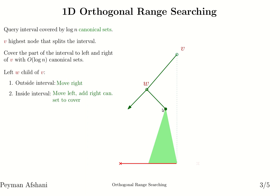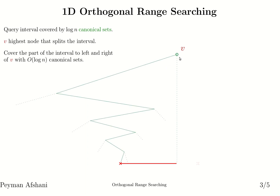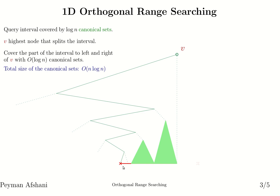There is another way to look at the solution. Consider the path that connects v to the node that is the predecessor of the right endpoint. Sometimes this path will make a right turn and sometimes a left turn. Every time you make a left turn you add the right child to the cover, something like this. So we again have log n canonical sets covering the interval. Another important property is that the total size of all canonical sets is n log n.